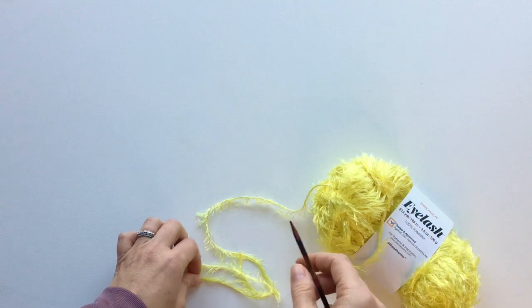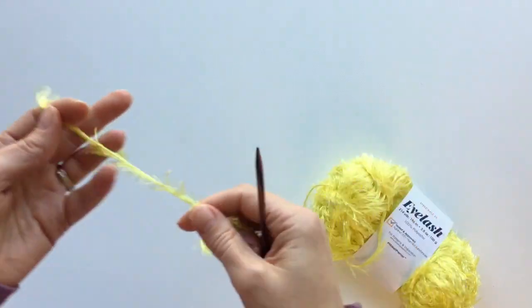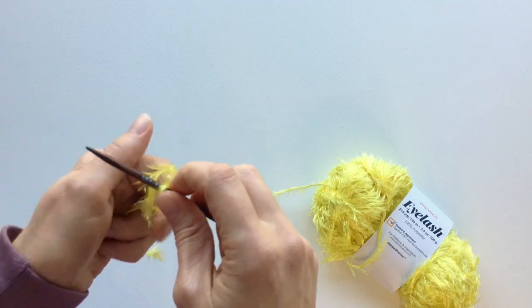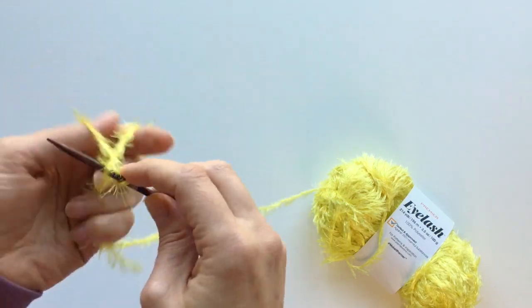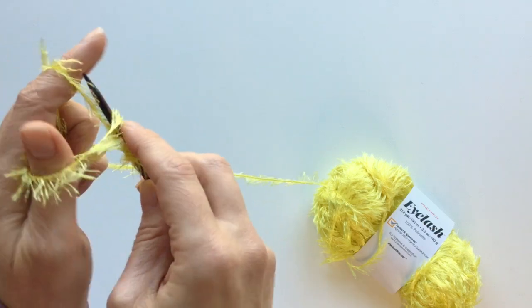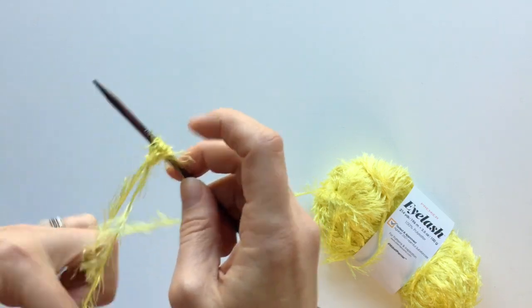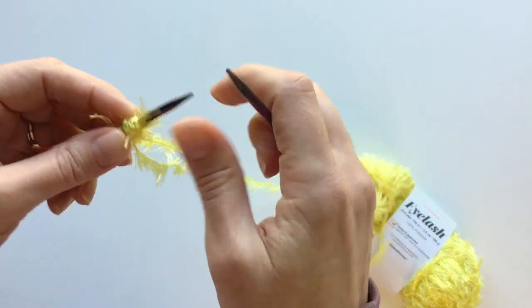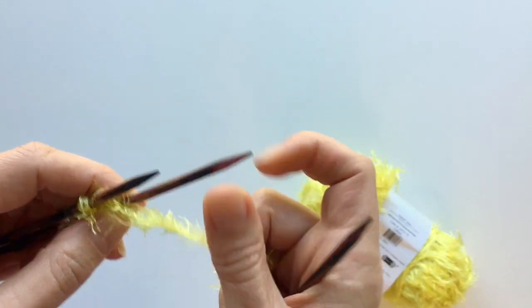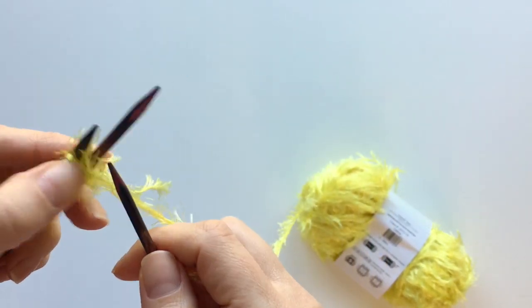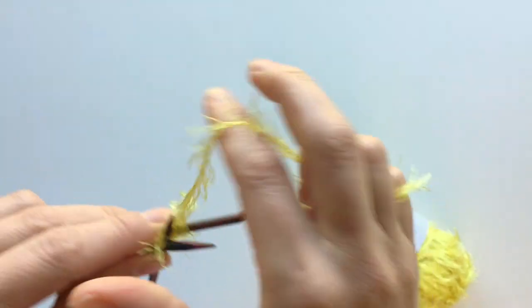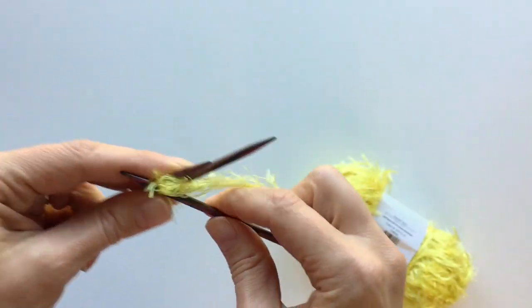To begin, I'm going to cast on four stitches, and then join in the round by rearranging my stitches. I like to start on just two double pointed needles. Our first round starts with increases, so we are going to knit into the front and back of each stitch around.